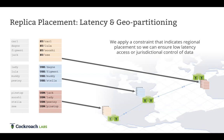Requiring reads to go through the leaseholder can affect performance due to hops, but the follow-the-workload heuristic mitigates this by moving the leaseholder close to where data is being accessed. For example, when a user is on the west coast, the leaseholder moves there so reads are fast. Applications can also use 'AS OF SYSTEM TIME' for follower reads, getting performance benefits without even moving the leaseholder.